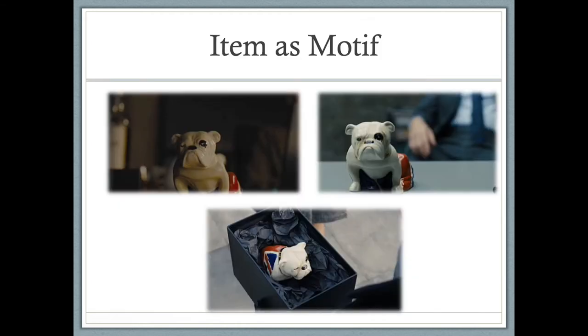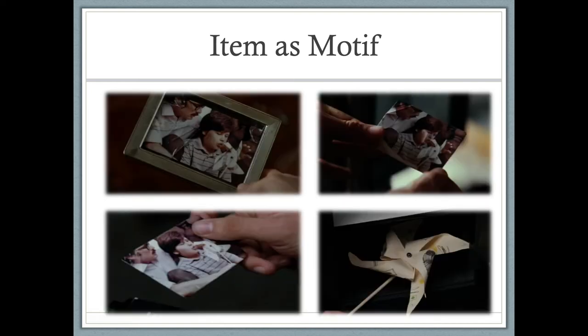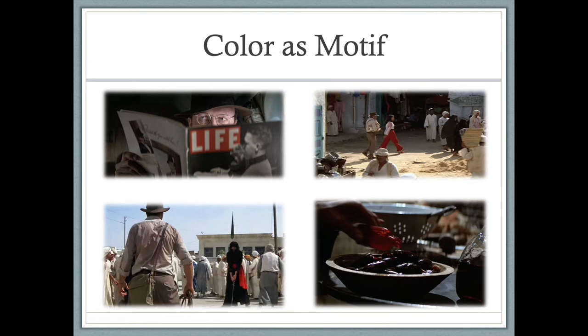Some quick examples from the James Bond movie Skyfall: there is a motif of a physical item — a ceramic bulldog with the British flag on it — that repeats at least three times throughout the film. In Inception, another physical item repeats: a picture of a man putting his arm around a young boy who is holding a paper pinwheel. Later it becomes just the picture, and then ultimately toward the end of the film it's the physical pinwheel still existing.